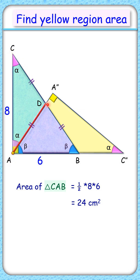Median divides triangle in two equal areas so this area will be 12 and this area will be 12 and in triangle AA'C' this yellow region that will be 24 minus 12 or 12 centimeter square here and that's our answer.